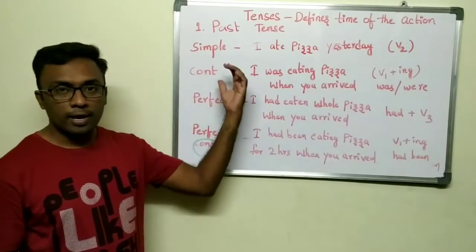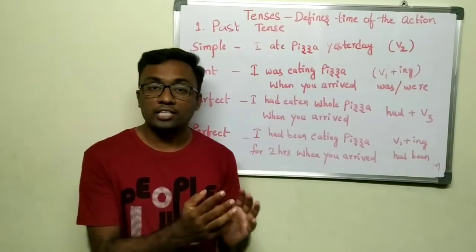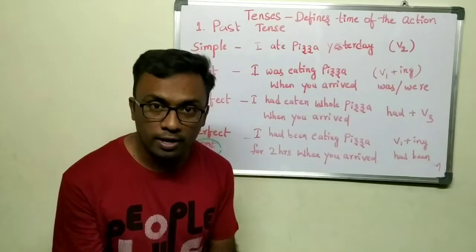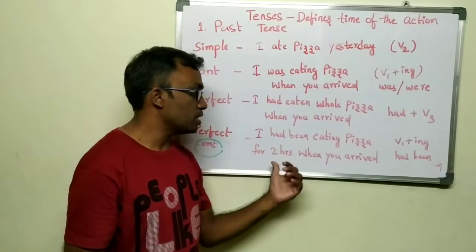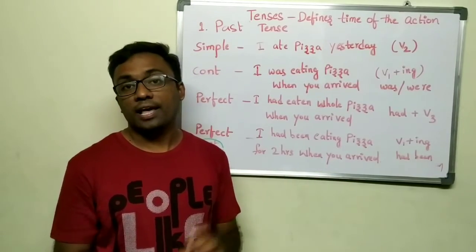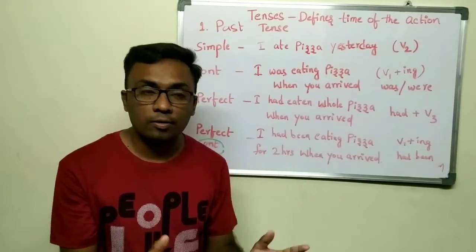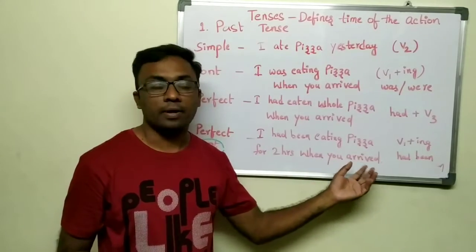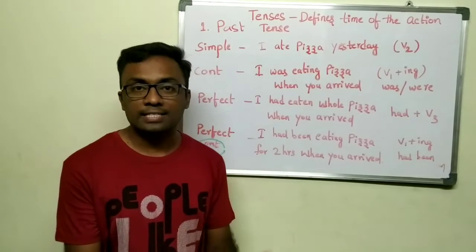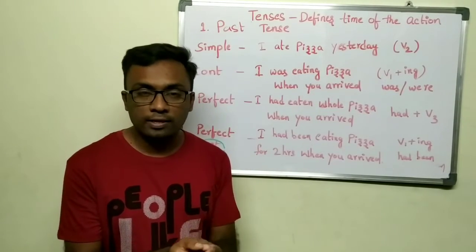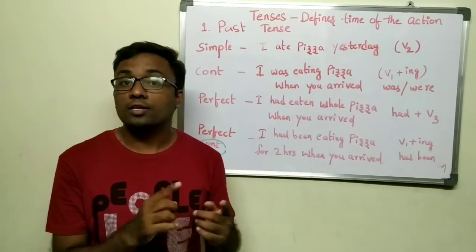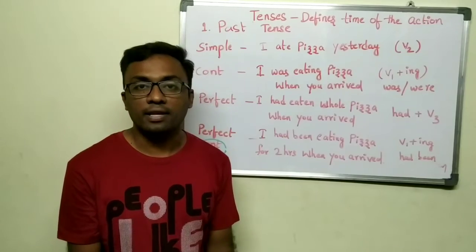Past perfect continuous tense: an action which had been happening in the past for a long time when another action happened. For example, 'I had been eating pizza for two hours when you arrived.' This action had been happening continuously in the past when another action occurred. The key points remain: verbs change according to the state of the tense, and the usage of 'have' and 'has' should be taken care of.